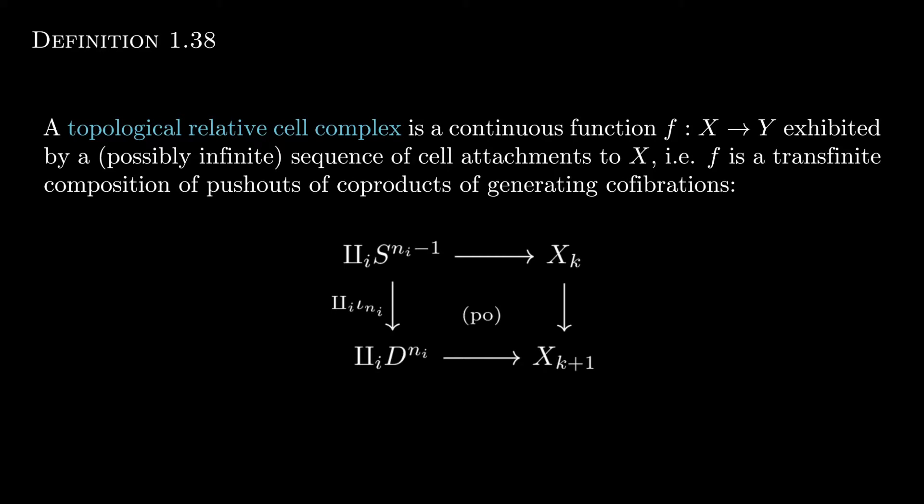We could attach a finite or even infinite amount of these cells. What would happen in the infinite case is that we would consider this relative cell complex to just be a transfinite composition of co-products of these generating cofibrations. Why co-products? Well, it might be the case that we want to attach more than one N-dimensional cell. Might want to attach like two N-dimensional cells, three N-plus-one dimensional cells, and in that case we would need to use co-products.